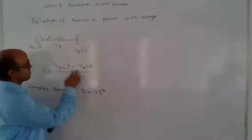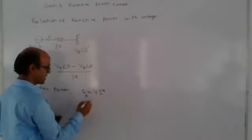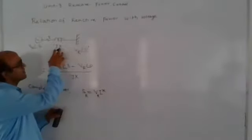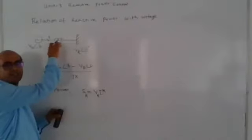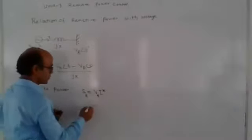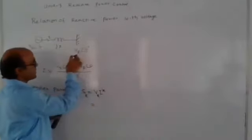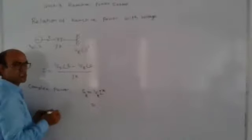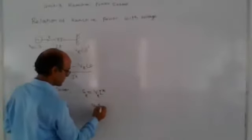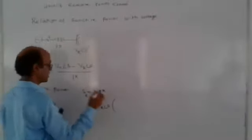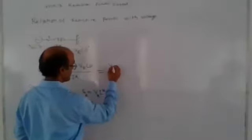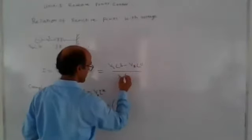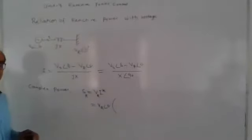We are finding power at the receiving end. SR equals VR times I conjugate, where I is the current arriving at the receiving end. VR is VR magnitude at angle zero. Substituting the current expression: the numerator is VS angle delta minus VR angle zero, divided by X at angle 90 degrees — because jX corresponds to magnitude X at angle 90 degrees, since arctan(1/0) equals pi/2.